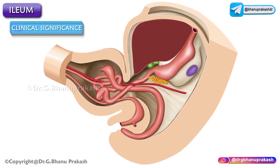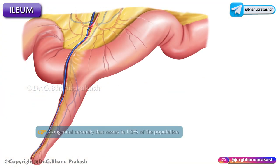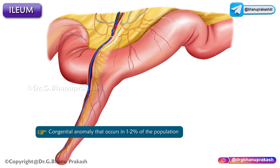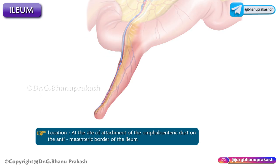Next is clinical anatomy: Meckel's diverticulum. Meckel's diverticulum is a remnant of the proximal part of the embryonic omphalomesenteric duct. It is a congenital anomaly seen in approximately 2% of the population. Its location is at the site of attachment of the omphalomesenteric duct on the antimesenteric border, which is the border opposite to the mesenteric attachment of the Ilium.